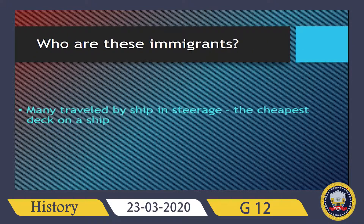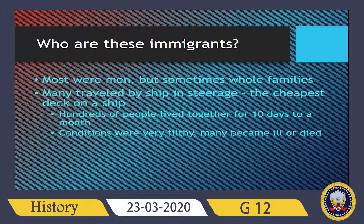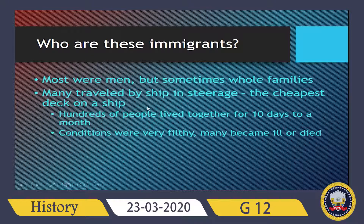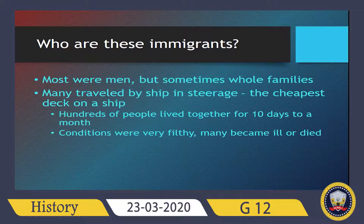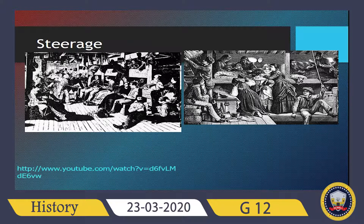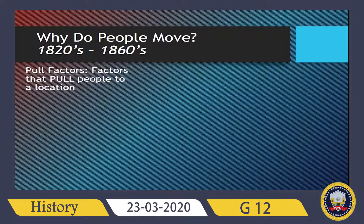Who were these immigrants? Most of them were men, but sometimes whole families moved together to live in America. Usually they traveled by ship in steerage — the cheapest deck on a ship. Hundreds of people lived together for 10 days to a month, and conditions were very harsh. Many became ill or died. You can see the conditions these people endured in order to travel from Europe to America.